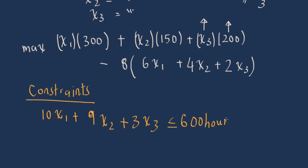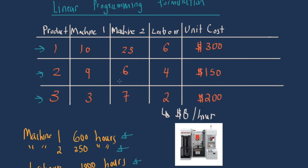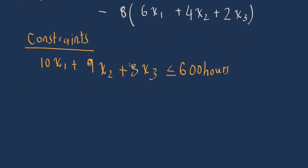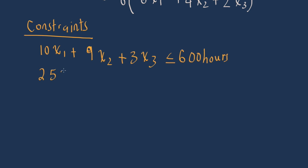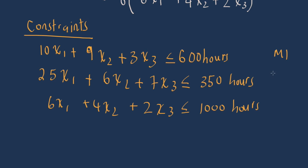Similarly for machine two: 25·x1 + 6·x2 + 7·x3 must be less than or equal to 350 hours. For labor, you sum up the total labor for the three products: 6·x1 + 4·x2 + 2·x3 must be less than or equal to 1,000 hours. So those are the constraints for machine one, machine two, and labor respectively.